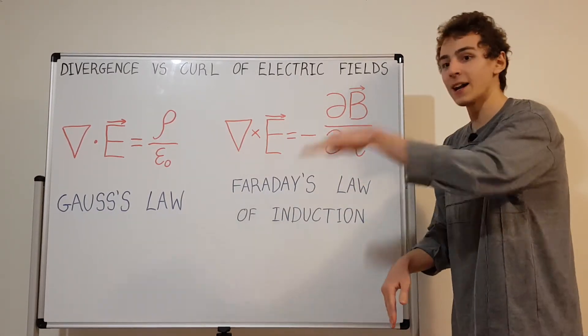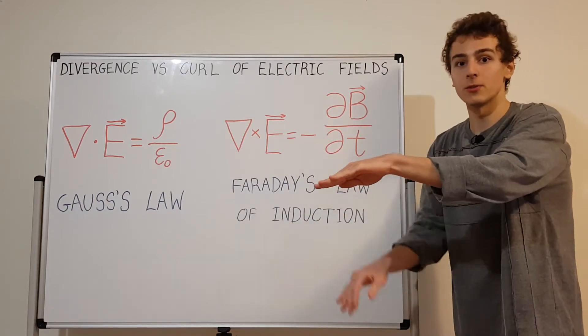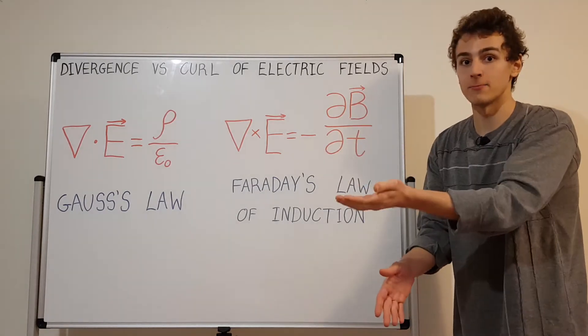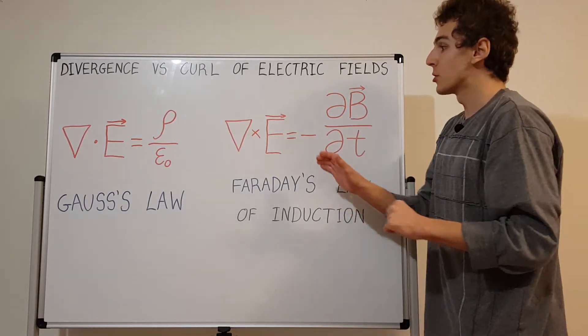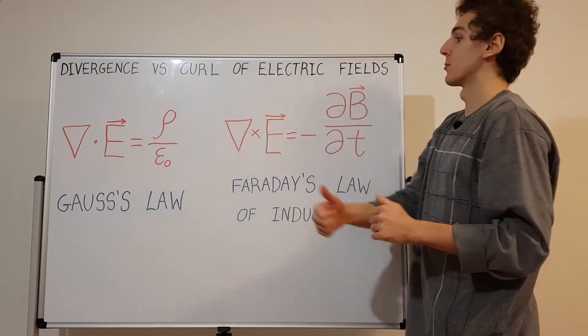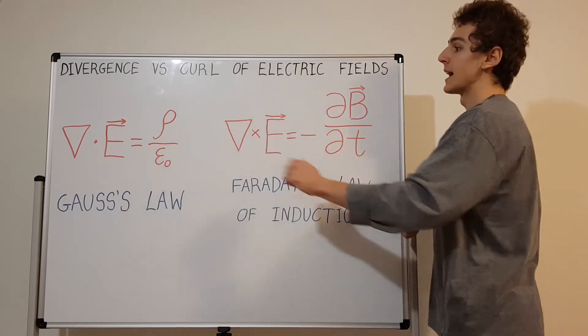If you were to put a paddle in this imaginary fluid of the vector field, that's the direction along which the paddle would rotate. You use the right-hand rule to determine if it's positive pointing in that direction or negative pointing in the other direction. That's curl and that's divergence.